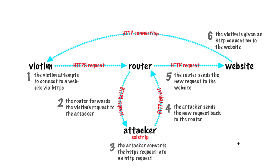That's step one — we've forced the victim to use HTTP. Now, say the victim navigates to Facebook and enters their login information and clicks the login button. Their username and password is sent to the router, but because we're using ARP spoof, the router forwards that data to us. We cycle it through SSL strip, which reads and logs that data, then sends it to the router, which forwards it to the website. The victim will be none the wiser because the data simply passes through us.